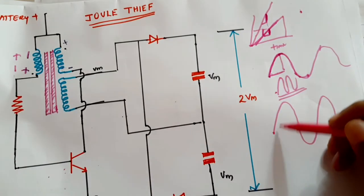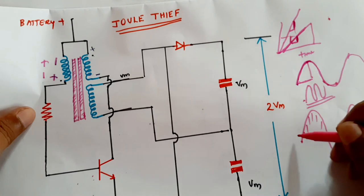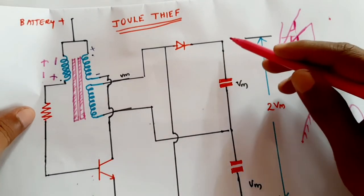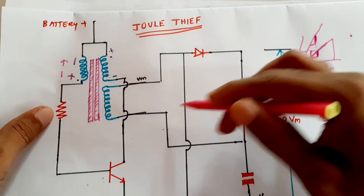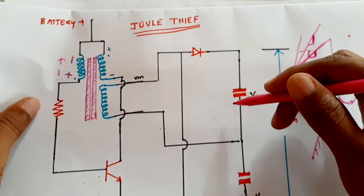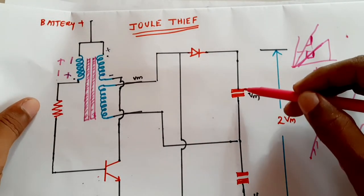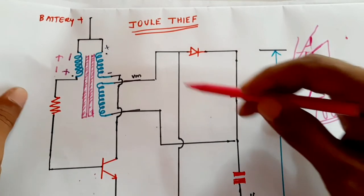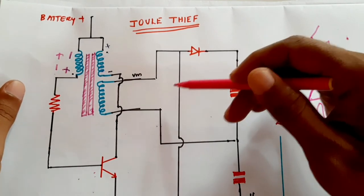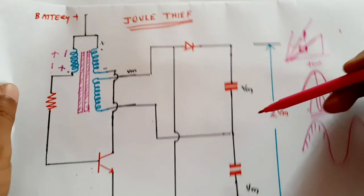Since the output is an AC signal with varying voltage, in order to get a fixed voltage we have to use a voltage rectifier — the AC has to be converted to DC. We don't want to lose the voltage, so we are using this circuit which is both a rectifier and a voltage doubler.